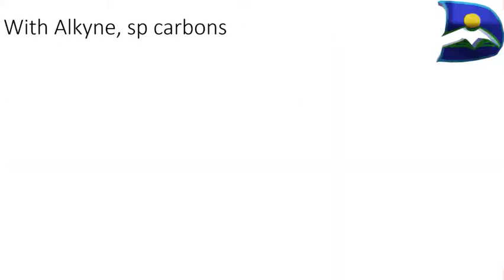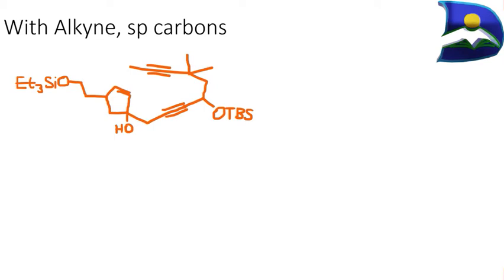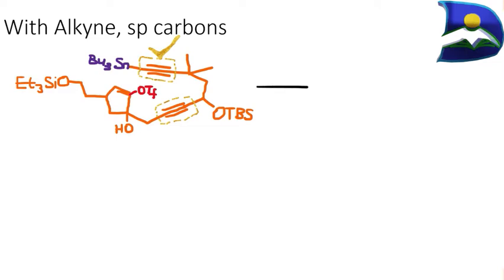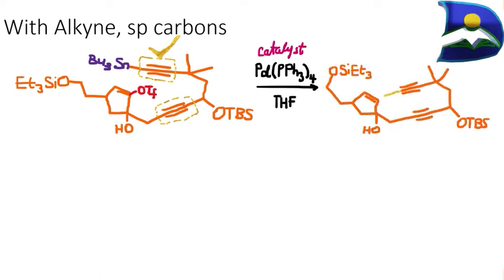It's also possible to apply this to sp carbons. For example, with a single reactant that has two active sites — a triflate region creating an organohalide on one end, and a stannyl organometallic on the other — the palladium catalyst brings those two ends together to close a ring, forming a new sigma bond. This gives 46% yield; the lower yield is due to steric restrictions limiting the formation of this large compound.